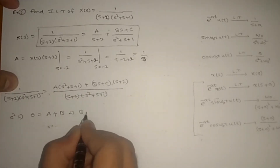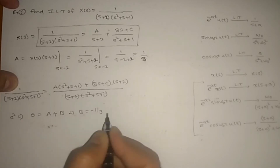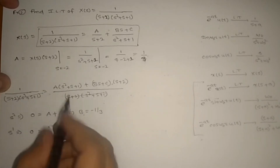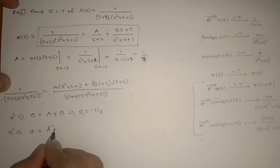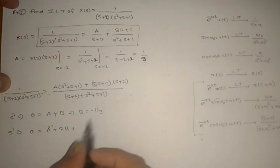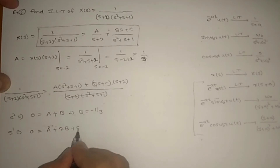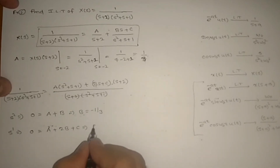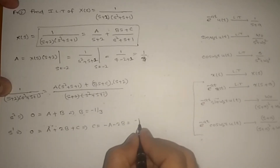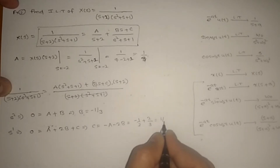So B = −1/3. Comparing the s⁰ (constant) terms: 0 = A + 2B + C, giving C = −A − 2B = −1/3 + 2/3 = 1/3.